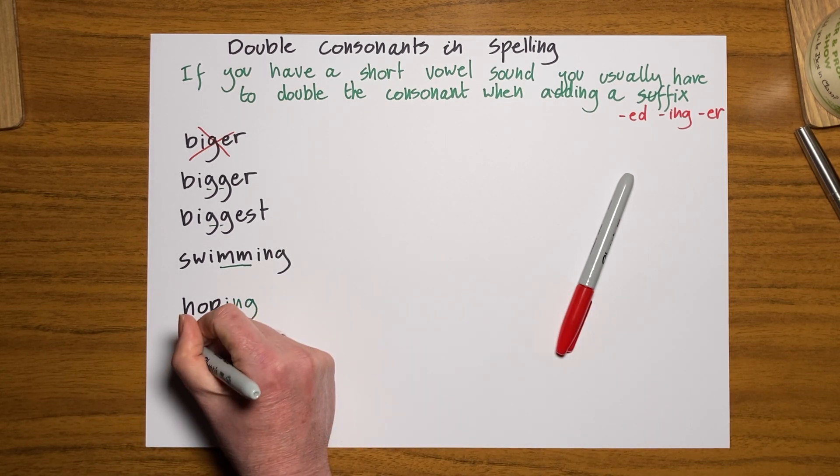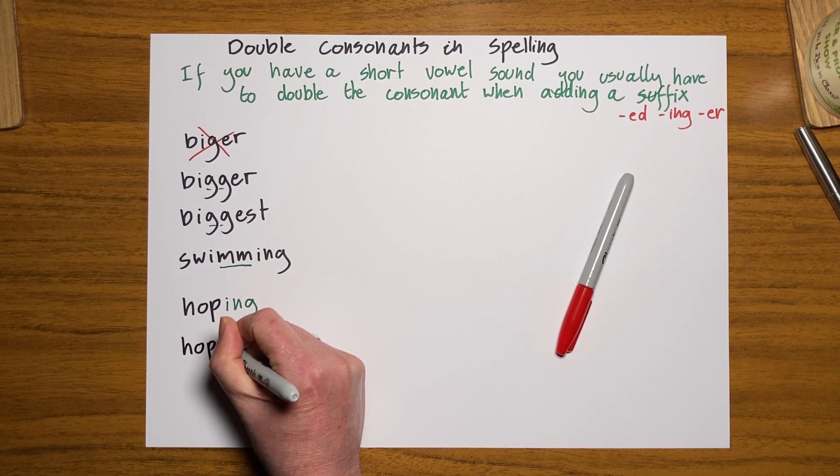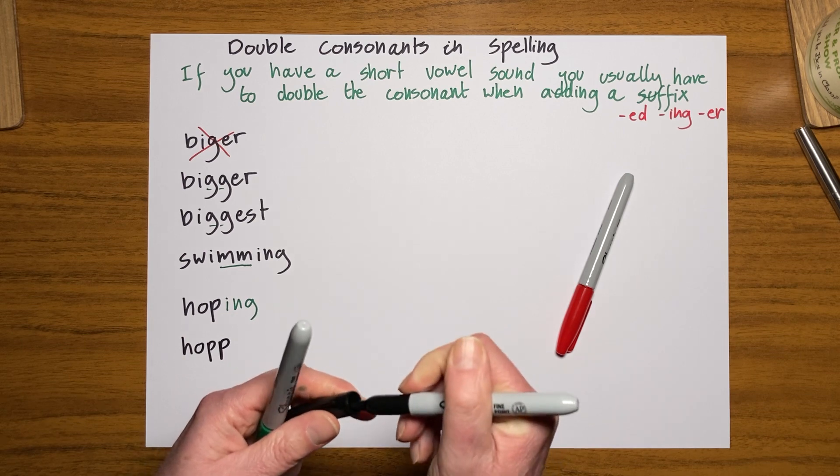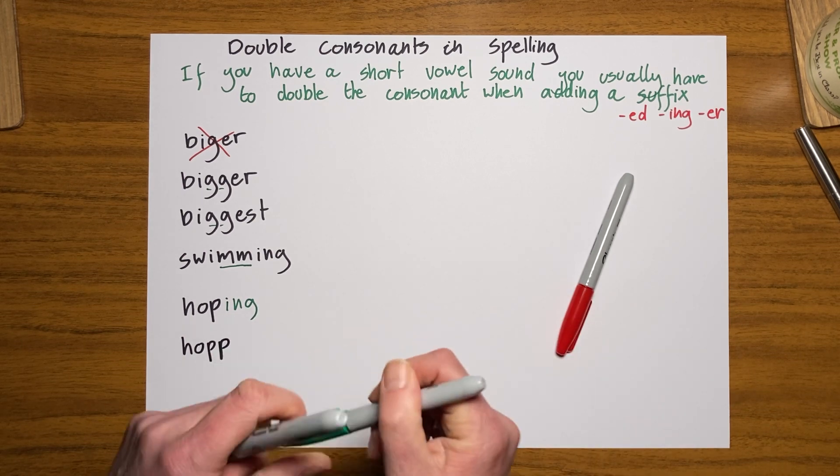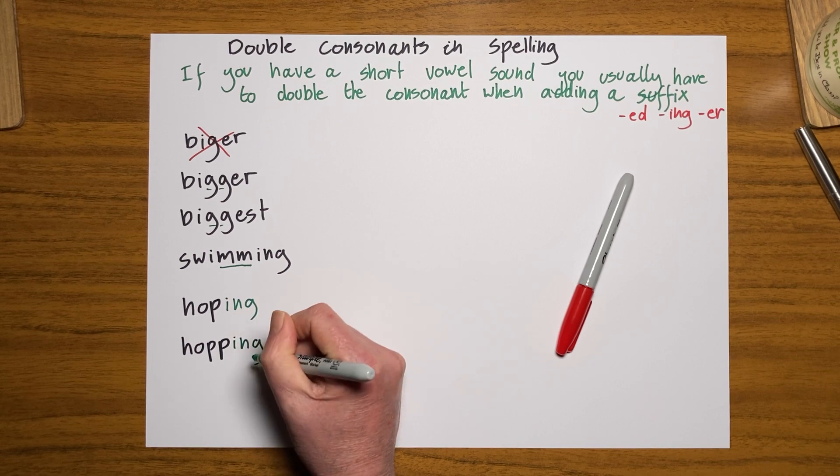If I want to be hopping, I need to double that vowel - and consonant I mean, sorry - and then add the ING, hopping.